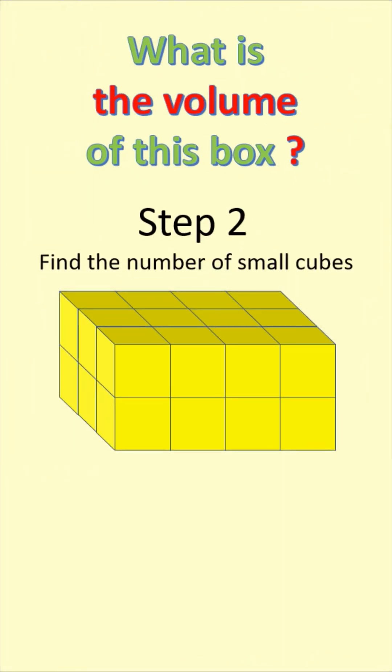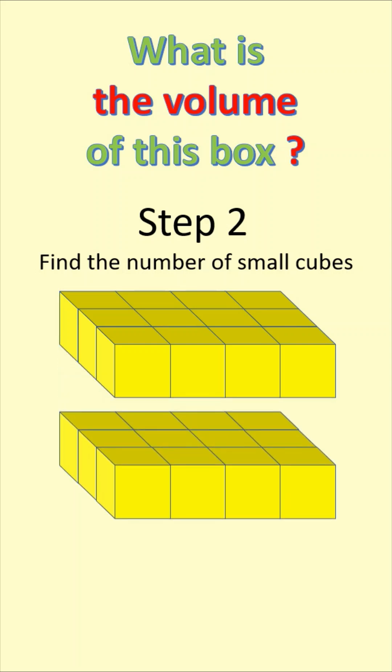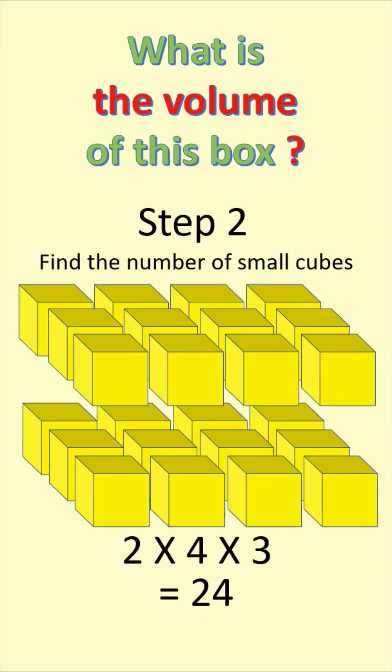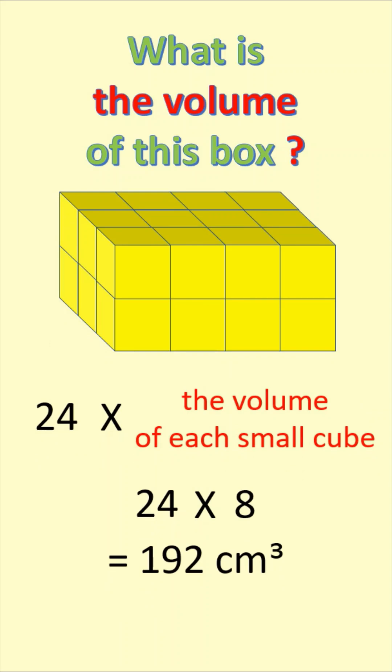Then we have to find the number of small cubes. There are totally 24 cubes altogether. The volume of the box is 24 times the volume of each small cube. That is 24 times 8 equals 192 cubic centimeters.